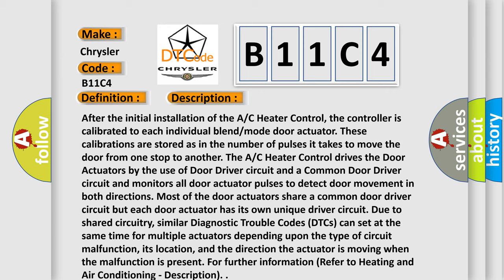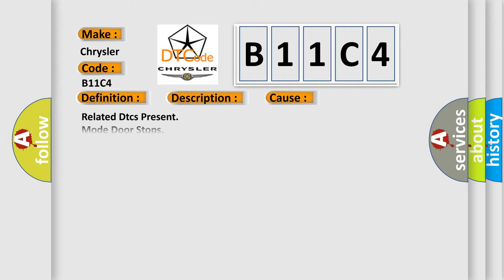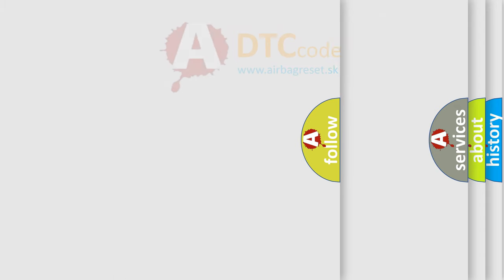Most door actuators share a common door driver circuit, but each door actuator has its own unique driver circuit due to shared circuitry. Similar diagnostic trouble codes can set at the same time for multiple actuators, depending upon the type of circuit malfunction, its location, and the direction the actuator is moving. When the malfunction is present, refer to heating and air conditioning description for further information. Related DTCs include present mode door stops, mode door, mode door actuator, or AC heater control.